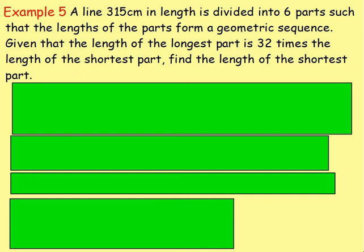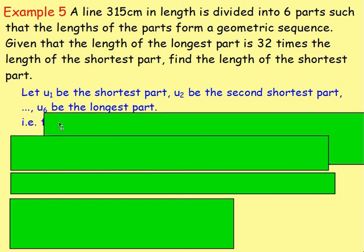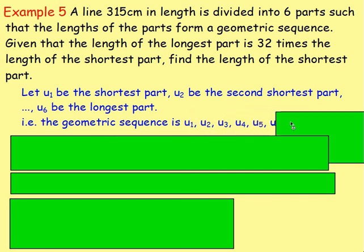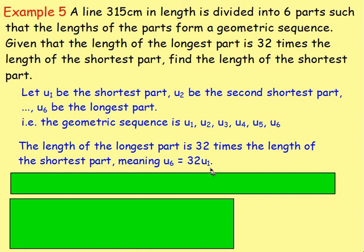Example 5: a line is 315 centimetres in length and is divided into six parts such that the lengths form a geometric sequence. Given that the length of the longest part is 32 times the length of the shortest part, find the length of the shortest part. We have a geometric sequence u1, u2, u3, u4, u5, u6 — where u1 is the shortest part and u6 is the longest. We're told u6 equals 32 times u1.